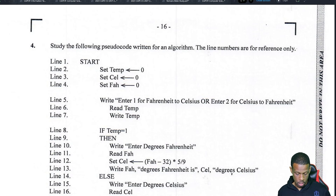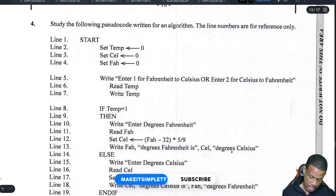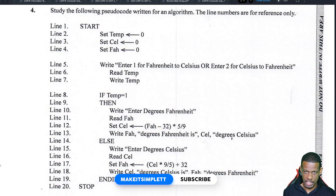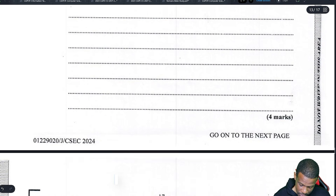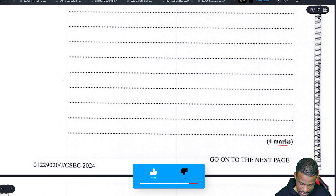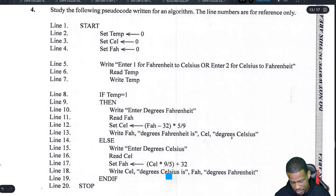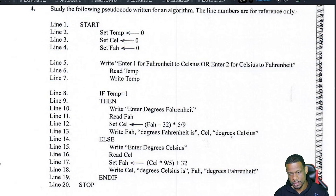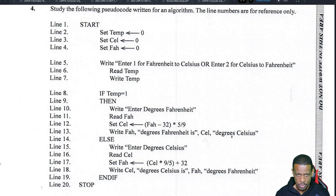We're on to number four. The question asks us to study pseudocode written for an algorithm — line numbers are for reference only — and explain exactly what the algorithm does. This involves a lot of writing. This is definitely on the syllabus; you have to know how to explain in words, in narrative form, how an actual algorithm works.